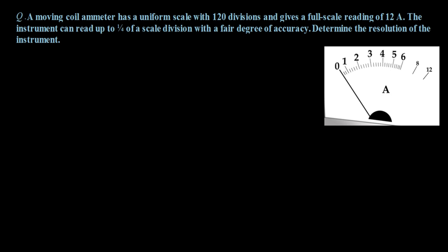Now understand this concept with a problem. The problem says a moving coil ammeter has a uniform scale of 60 divisions and gives a full-scale reading of 12 ampere. This is the ammeter scale I have shown here. Correlate the problem with the scale shown in the diagram.